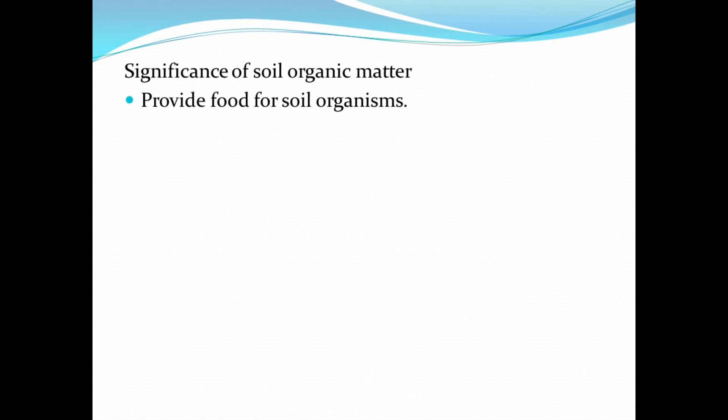Next let's take a look at the significance of soil organic matter. Soil organic matter provides food for different soil organisms — for example, earthworms, termites, and other organisms that use the soil as shelter. It is also a source of plant nutrients, as organic matter decomposes and releases nutrients into the soil that can be absorbed by plant roots and benefit the plants.